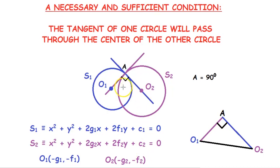So when S1 and S2 intersect orthogonally, the angle A will be 90 degrees. Since these two are vertically opposite angles, the angle O₁AO₂ will also be equal to 90 degrees. So this triangle O₁AO₂ will be a right angle triangle. So it will obey the Pythagoras theorem.